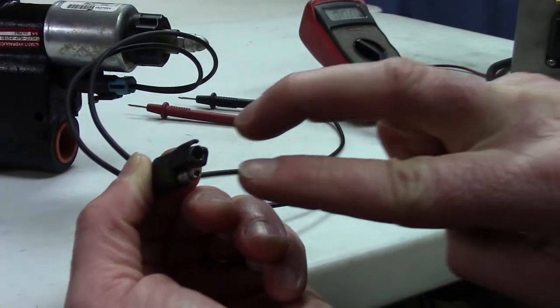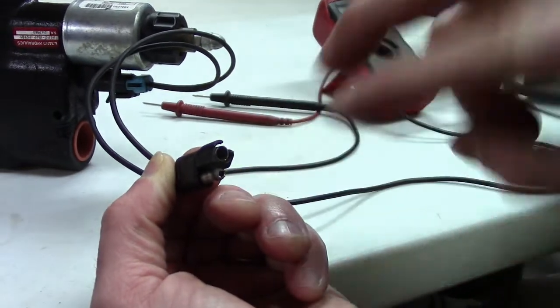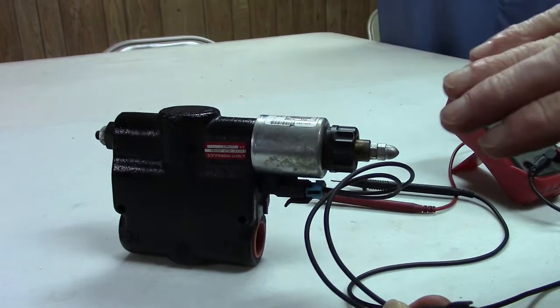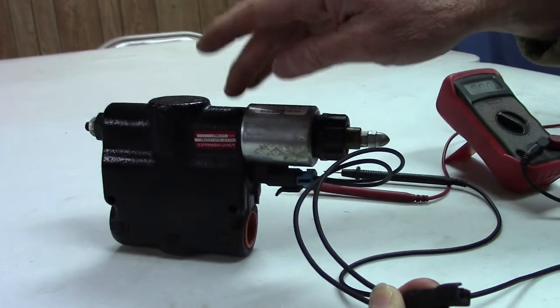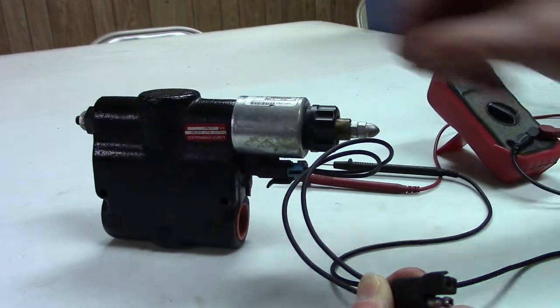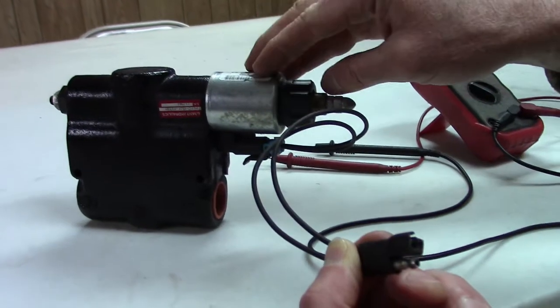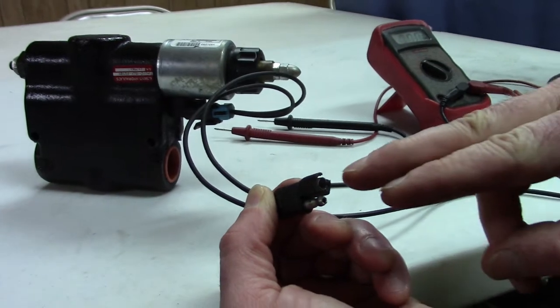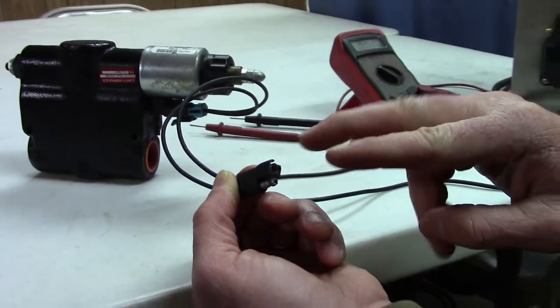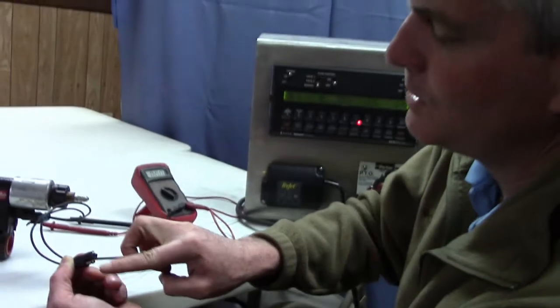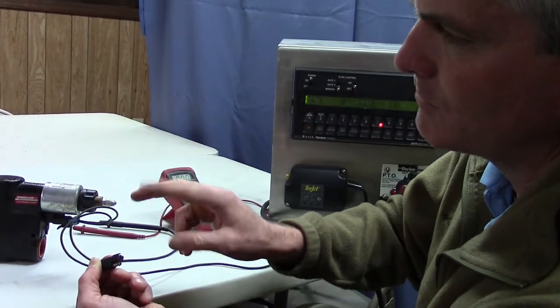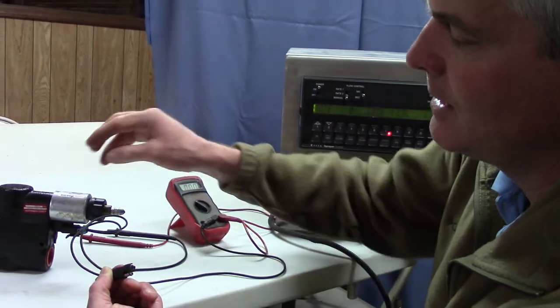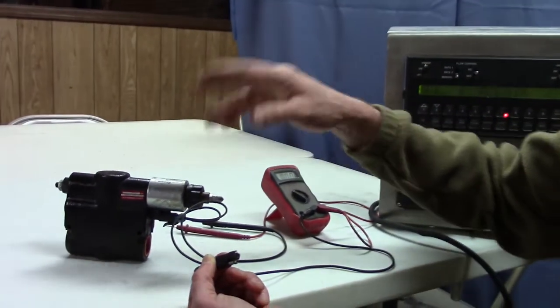When you put 12 volts to it, it energizes this solenoid and it causes that plunger to be raised up and oil goes past, goes through this valve because the plunger is raised up. So putting 12 volts to it opens it wide open, taking away the 12 volts closes it. It doesn't matter about the polarity of it, your positive wire could be here and your negative wire could be there or vice versa. You just take 12 volts and send it to this and it energizes this solenoid and opens it wide open.